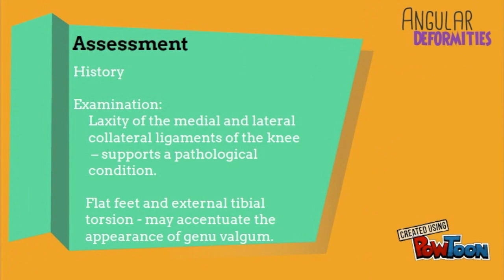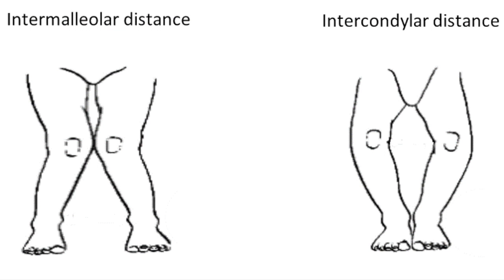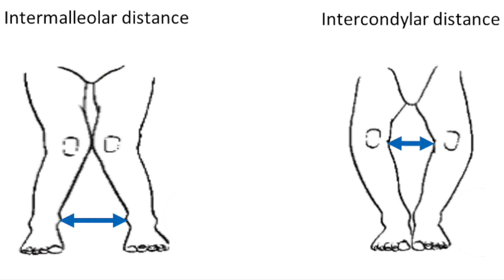Take a thorough history and examination. Check for laxity of the medial and lateral collateral ligaments of the knee, which is supportive of a pathological condition. Check for flat feet and external tibial torsion, which may accentuate the appearance of genu valgum. It is important to assess the progression of the deformity. Measure intermalleolar distance to assess progression of genu valgum, and intercondylar distance to assess progression of genu varum. These measurements should be done at regular intervals; if the measurements increase with time, the deformity may be worsening.